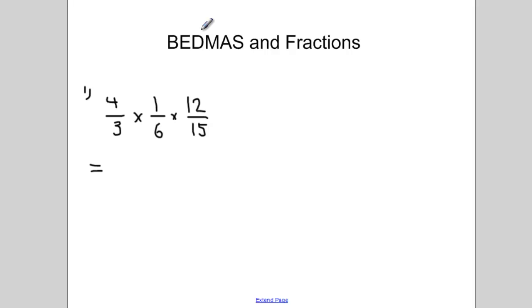We'll start with a simple example, three fractions all multiplied together. The process for solving this is similar to solving two fractions multiplied together. We multiply all the top numbers together, 4 times 1 times 12. We put that over all the denominators multiplied together, 3 times 6 times 15. And when we evaluate that we should get 48 over 270.